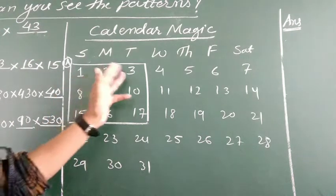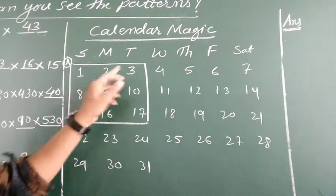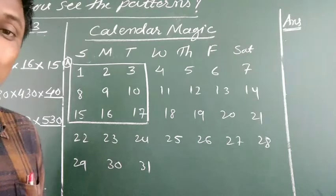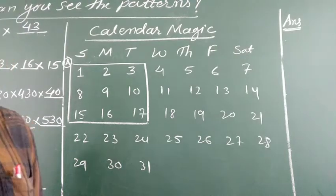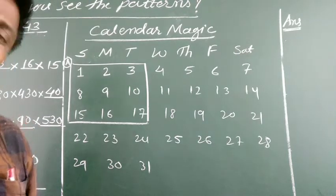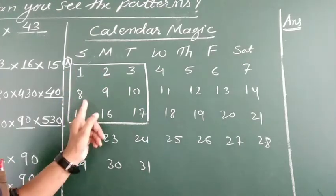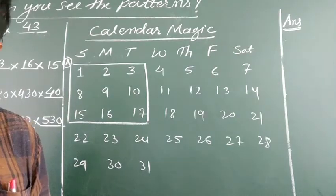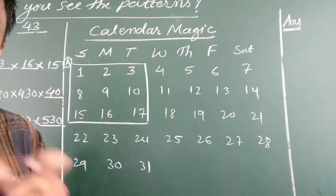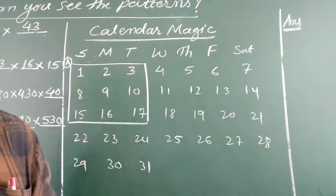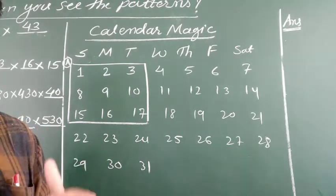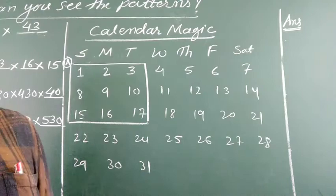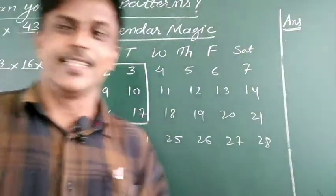Now we have to find out the addition of all these 9 numbers. Yes, it's very easy to add 1 plus 2 plus 3 plus 8 plus 9 plus 10, but it will take a long time. So without using this type of addition method, quickly we have to find out what will be the sum of all these 9 numbers. One trick is there — that is called magic here. Whatever square is given, first observe which number is in between — the middle number. Here it is 9.